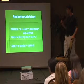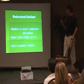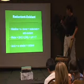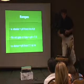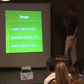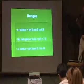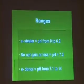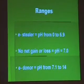Water has a concentration where the hydrogen and hydroxide are equal, and that's a pH of 7 — that's distilled water. So 0 to 6.9 is an electron stealer, 7.0 pH is neutral, and the electron donors are 7.1 to 14.